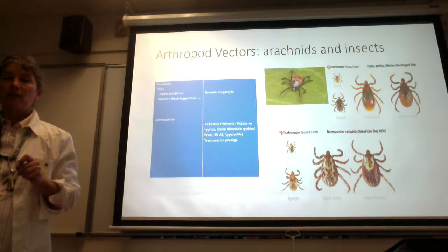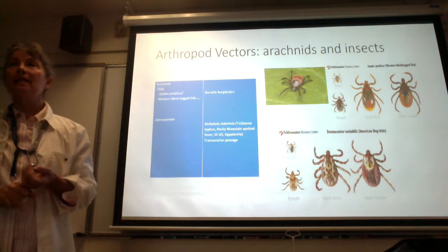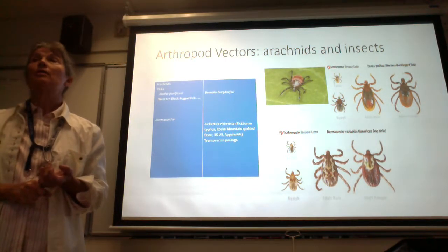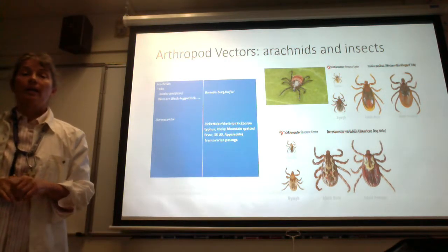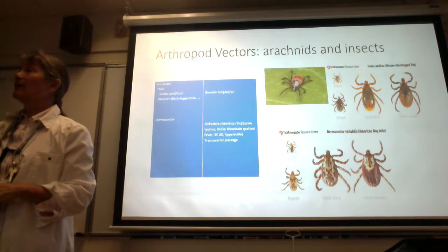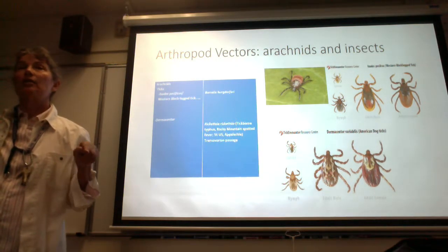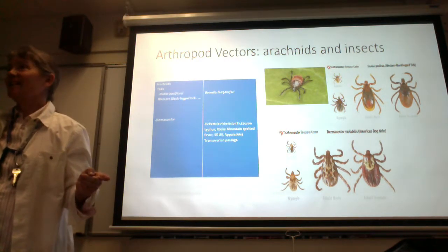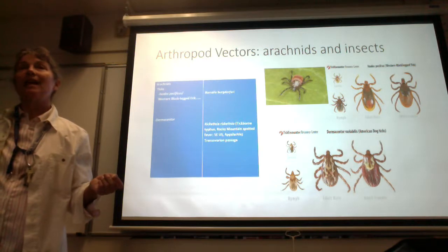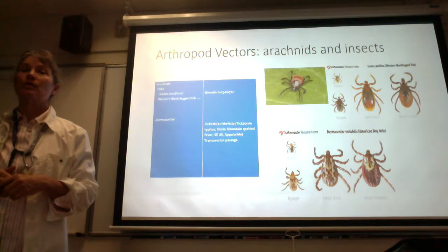There are two groups of arthropods we're going to discuss, and both groups are blood feeders. One group belongs to what are called the arachnids, which include spiders and ticks - ticks are the ones we'll focus on. The second group are called insects. An easy way to distinguish adult arachnids from adult insects: arachnids as adults have eight legs, insects as adults have six legs.